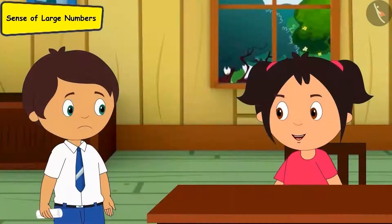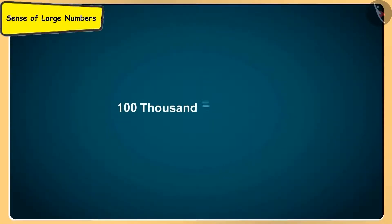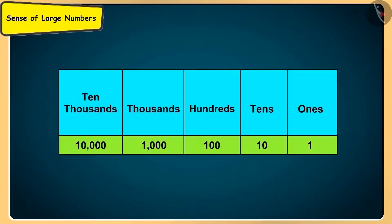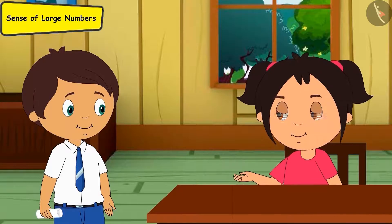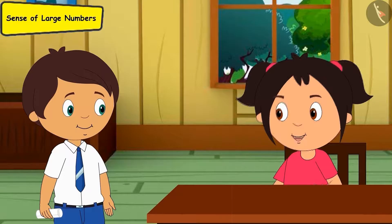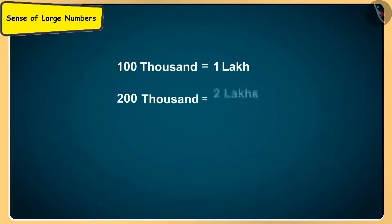Oh Sonu, hundred thousand means one lakh. But how, Didi? To see this, we write one thousand like this, ten thousand like this. Now tell me how to write hundred thousand. Oh, this is actually one lakh! Yes, one hundred thousand is equal to one lakh. Similarly, two hundred thousand will be two lakhs, three hundred thousand will be three lakhs.